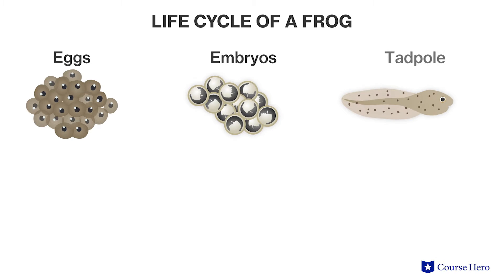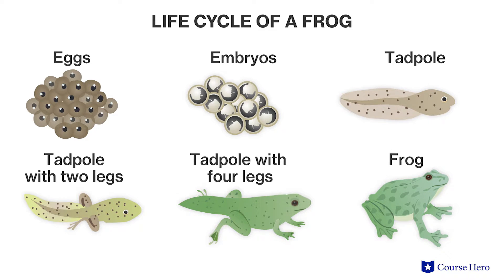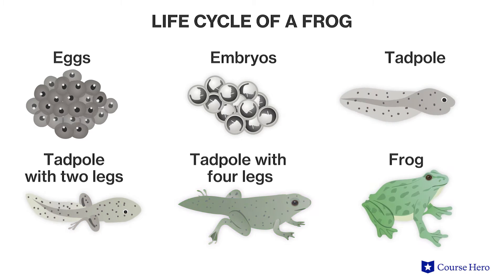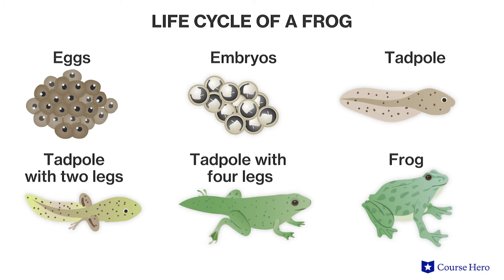For example, the life cycle of a frog includes markedly different physical appearances at different stages of development. The tadpole, which is the juvenile form, has gills and a tail. As that tadpole becomes a frog, the gills are slowly replaced by lungs, the tail disappears, and legs form. The DNA of the organism remains the same throughout its life. However, different genes are active during different stages of development, resulting in the differences in appearance at each of these stages.